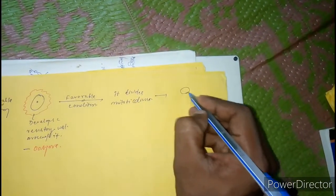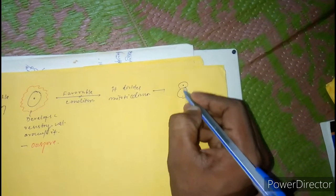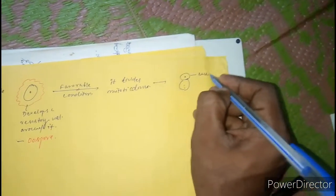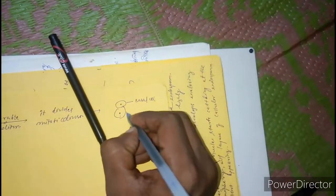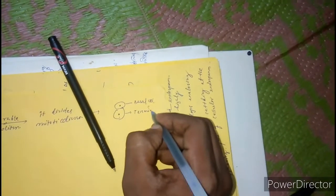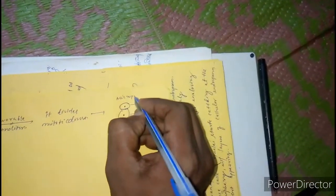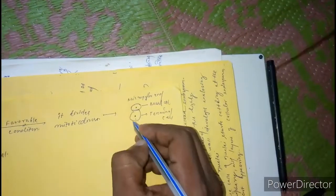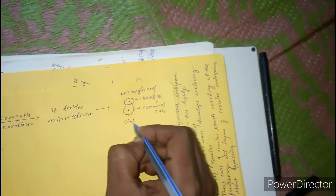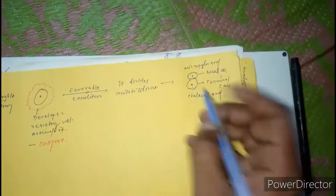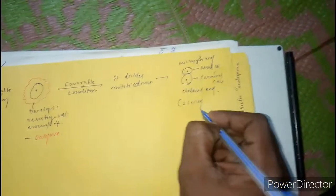Due to mitotic division, there will be formation of an upper basal cell and a lower terminal cell. The upper basal cell forms towards the micropylar end, and the terminal cell forms towards the chalazal end. This is termed as the two-cell stage embryo.